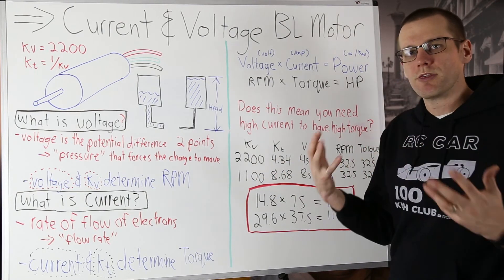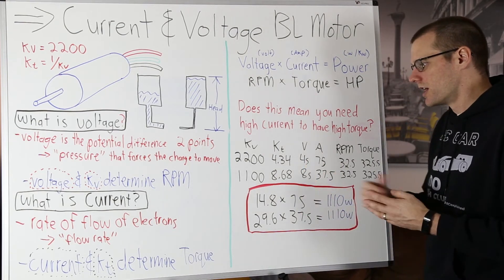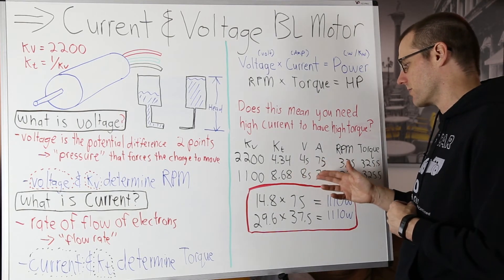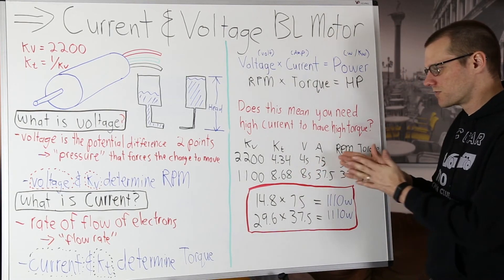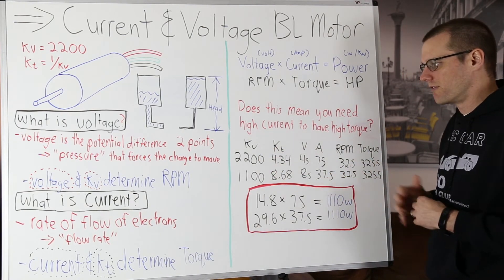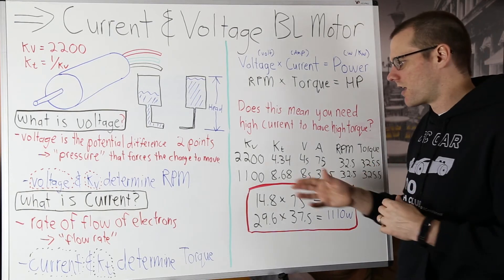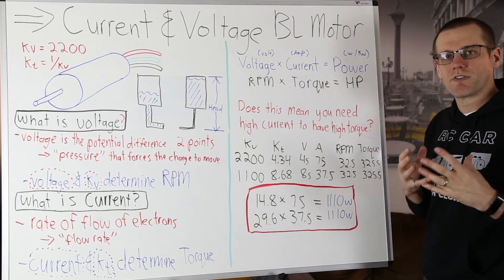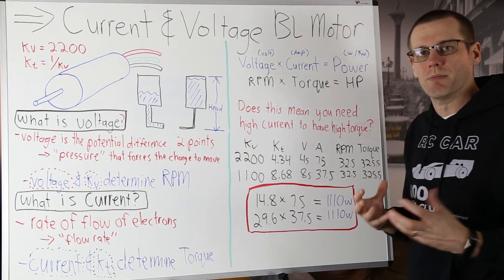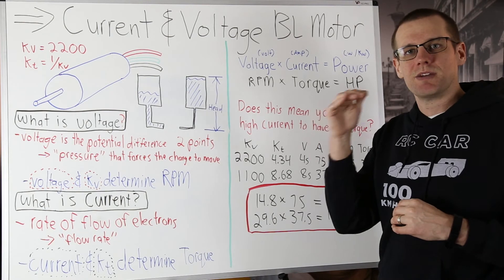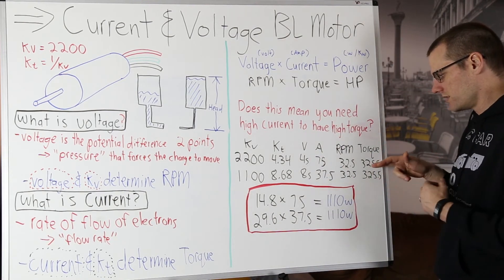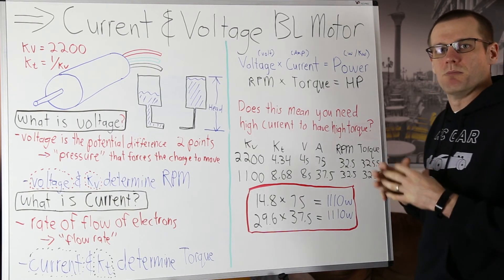If you look at the voltage that you run through both of these specific motors, the 2200 KV motor is going to experience a 4S pack where the 1100 KV motor is going to experience an 8S pack. And that means we're going to pull about 75 amps from our 2200 KV motor and 37.5 amps from our 1100 KV motor. The total amount of RPM that we get out of each one of these motors is about 32 and a half thousand RPM.